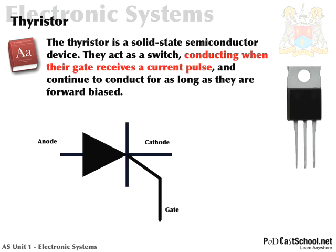There's the symbol and you'll note that it's a bit like a diode, only it's got this extra leg here. That leg is the gate, which we talked about in the definition. It also has an anode, which is the positive terminal of the device, and a cathode, which is the negative. And you can see this is what it looks like over here on the right-hand side.